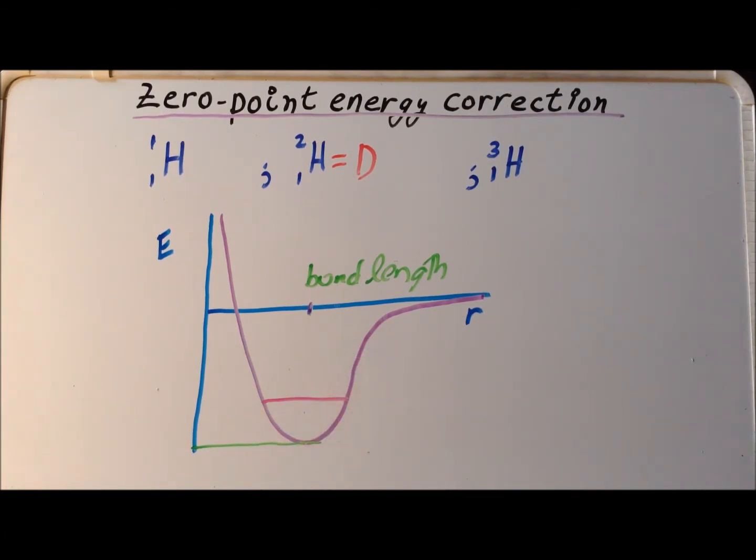The exact value of the zero-point energy depends on the reduced mass of the atoms involved in the bond. And we'll show what that looks like in just a second in a formal algebraic way. But for the time being, for representational purposes, let's assume that the line we're showing is the zero-point energy for a deuterium-deuterium bond.